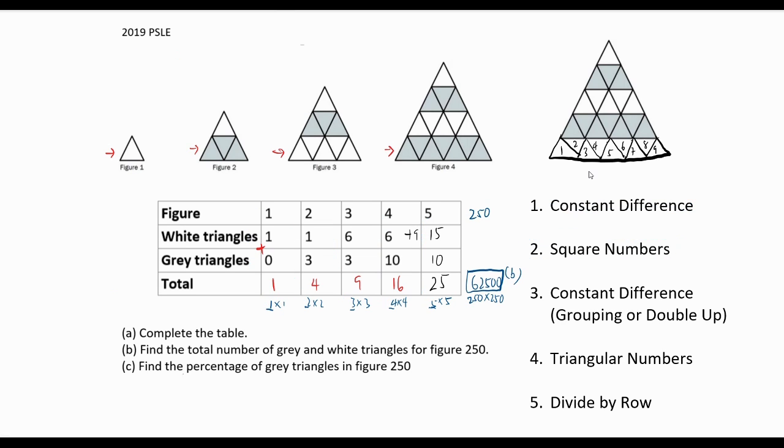For the last part, we need to find the percentage of grey triangles in figure 250. So to do that, we need to know the total triangles, which we have already done. It's 62,500. Now we also need to know the number of grey triangles. If we are unable to do so, we can also find the white triangles and then just take the total minus the white triangles to get the grey triangles.